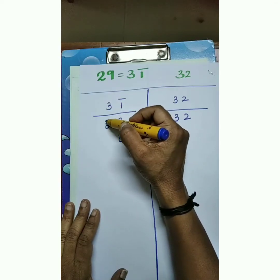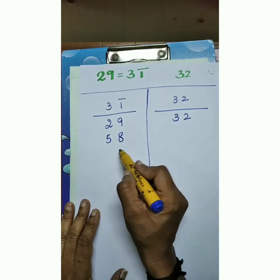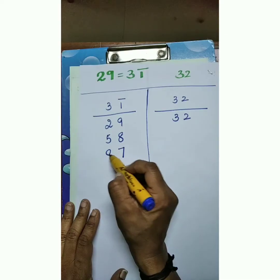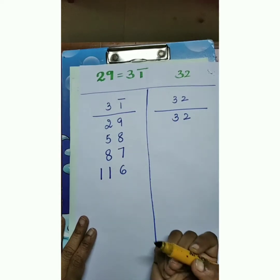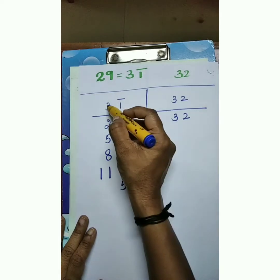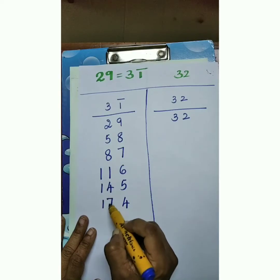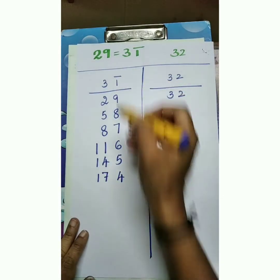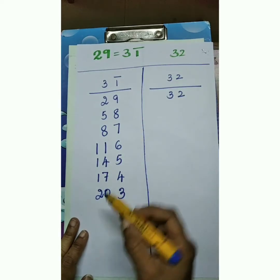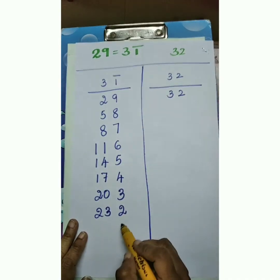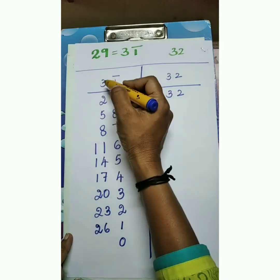Third level: 8 minus 1 equals 7, and 5 plus 3 equals 8. Fourth level: 7 minus 1 equals 6, and 8 plus 3 equals 11. Fifth level: 6 minus 1 equals 5, and 11 plus 3 equals 14. Sixth level: 5 minus 1 equals 4, and 14 plus 3 equals 17. Seventh level: 4 minus 1 equals 3, and 17 plus 3 equals 20. Eighth level: 3 minus 1 equals 2, and 20 plus 3 equals 23. Ninth level: 2 minus 1 equals 1, and 23 plus 3 equals 26. Tenth level: 1 minus 1 equals 0, and 26 plus 3 equals 29.